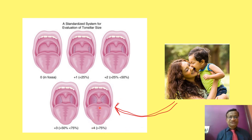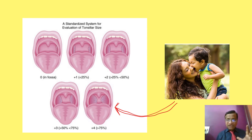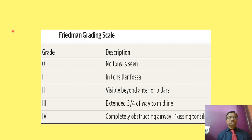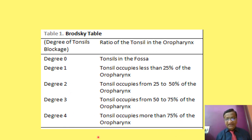Even with kissing tonsils, if you use thiopentone and give a muscle relaxant, the tonsils separate and you usually have a channel to intubate — mostly nothing happens. Friedman's grading scale goes from no tonsils seen to completely obstructing airway. The Brodsky scale grades zero through three, with grade three being 75 percent or more of the oropharynx obstructed.